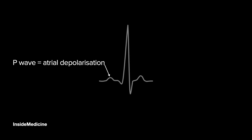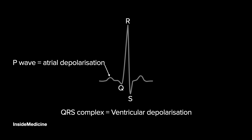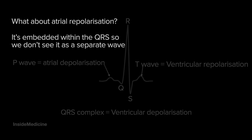Let's look at one segment of the ECG. The P wave is the first positive deflection, representing atrial depolarization. After this, we have the QRS complex, which represents ventricular depolarization. And then we have the T wave, which is ventricular repolarization. If you're wondering where atrial repolarization is — it's embedded within the QRS complex, so we don't see it as a separate wave.